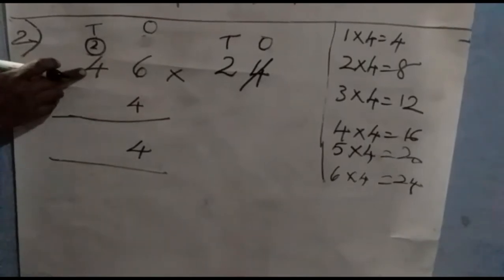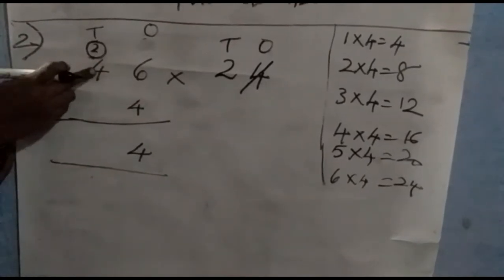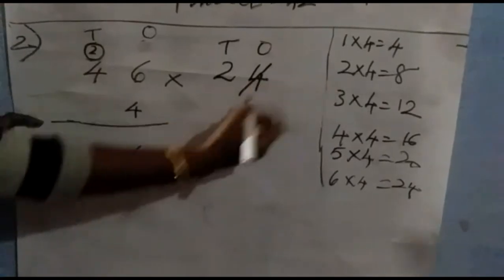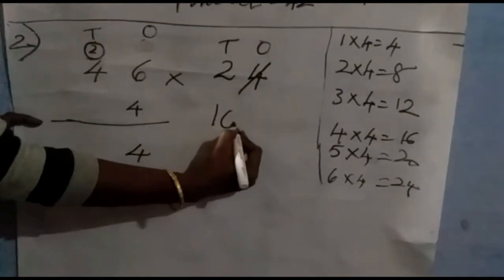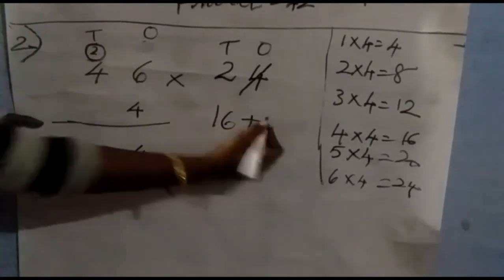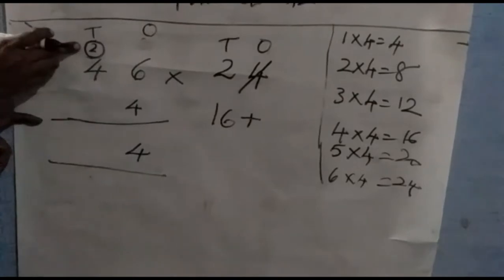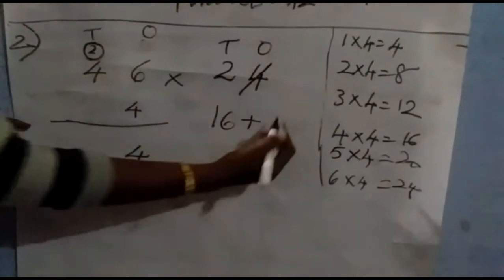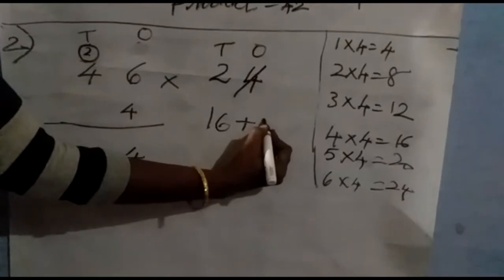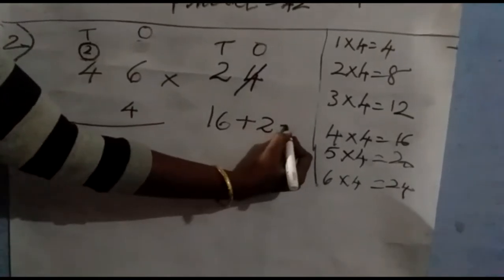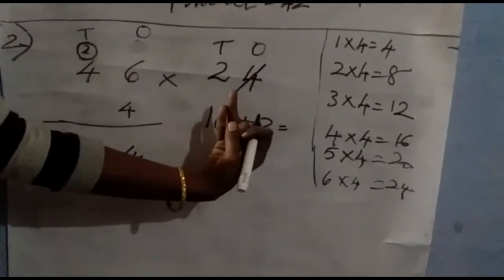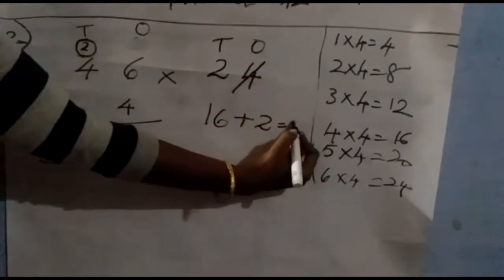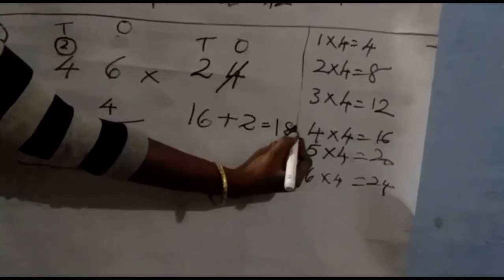Four fours are sixteen. Sixteen is also a two-digit number. What is the remainder we have? Two. So add two with sixteen: sixteen, seventeen, eighteen. Eighteen is a two-digit number.